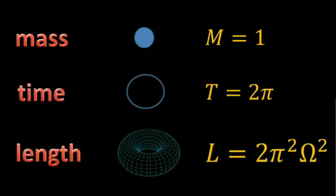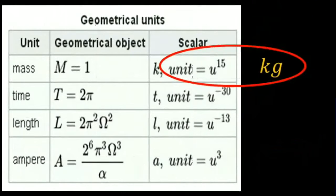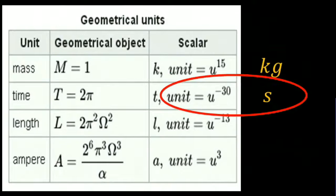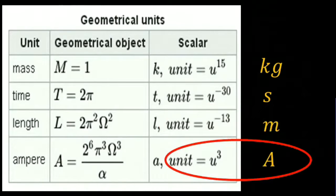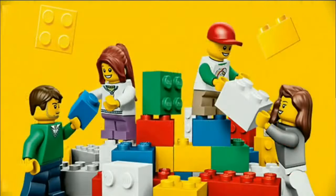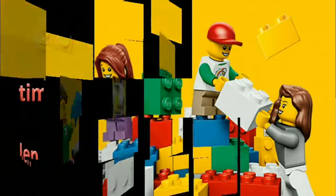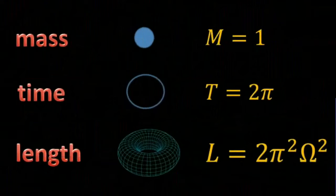Not only do these geometrical objects encode the properties for mass, space, and time, they are related to each other. The object for mass can link to the object for time, which can link to the object for space, and so on. And so we can build complex structures that smoothly combine our mass, space, and time objects together. But these are mathematical objects — they're not physical objects. They have no shape or size.